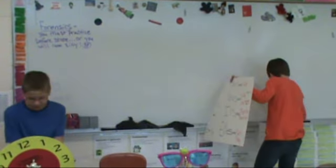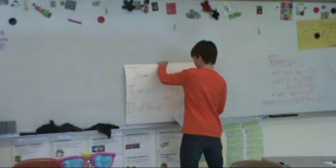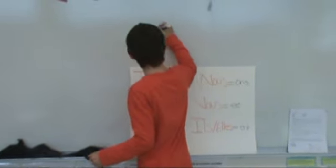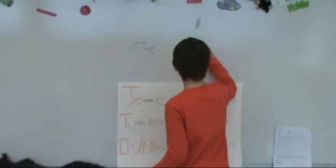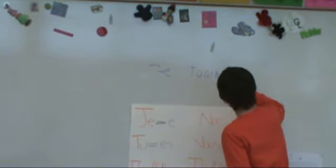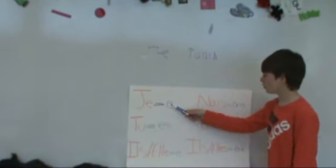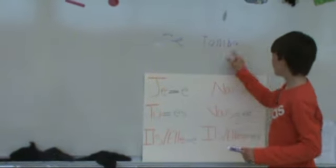On your -ER verbs, first you have your pronoun — so let's use je this time. Then you have your verb, so let's use tomber. You take off the -er on tomber, and then you look at the endings chart and see that the ending for je is -e. Then you put -e on. You do that with all the different endings depending on the pronoun, so like if you had tu, then you would have -es on the end.